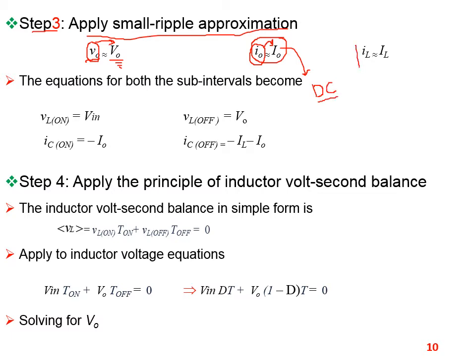Similarly, small i_L equals capital I_L. Applying the small ripple approximation to both sub-interval relations: for the first sub-interval VL_on equals V_in, and IC_on equals minus capital I0. For the second sub-interval, IC_off equals i_L minus I0, which gives IC_off equals I_L minus I0.